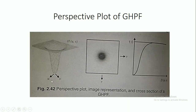This is the perspective plot of the Gaussian high pass filter. And if you see this perspective plot in the form of an image, this is the display of the Gaussian high pass filter in the form of an image. And here is the cross-sectional view of this Gaussian high pass filter.